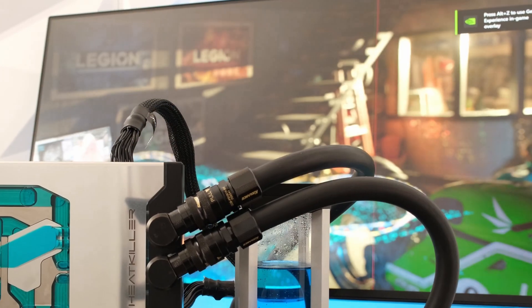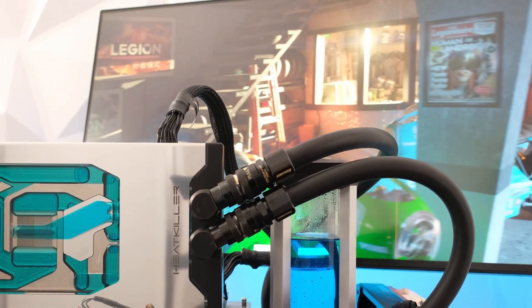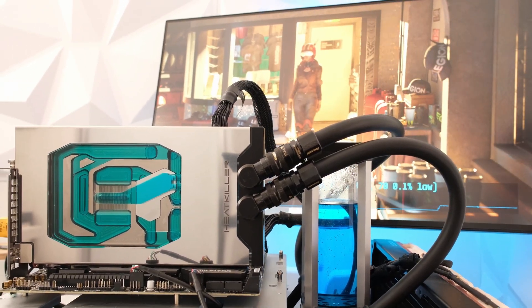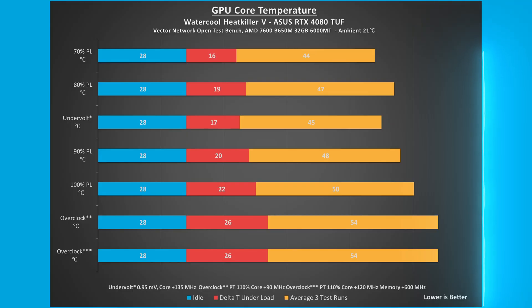To obtain the results, 3DMark Speedway stress test was run on our open air test bench with ambient room temperatures at 21 degrees Celsius. For 100% power limit stock thermals, the GPU core temperature rose 22 degrees Celsius from an idle 28 to 50 degrees Celsius under load.